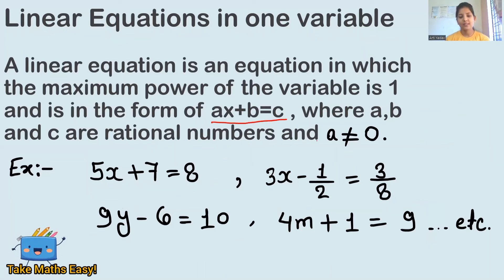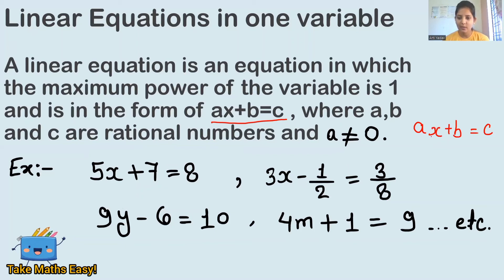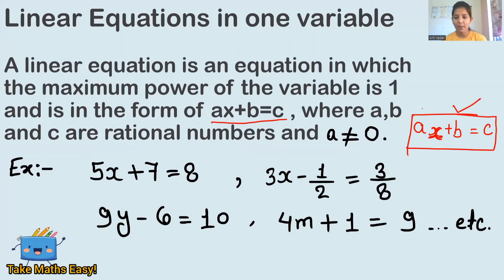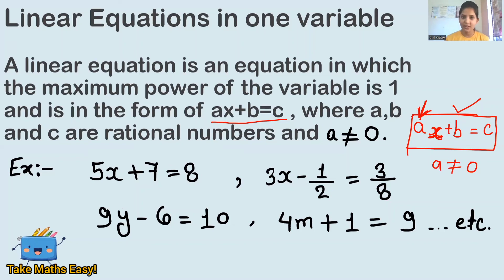The form ax plus b equals to c means: in place of a, b, and c, there can be any rational number, and x is the one variable. Remember that rational numbers include all whole numbers, all integers, and all natural numbers. Always remember: the linear equation will be in this form, but in the place of a, there cannot be zero.